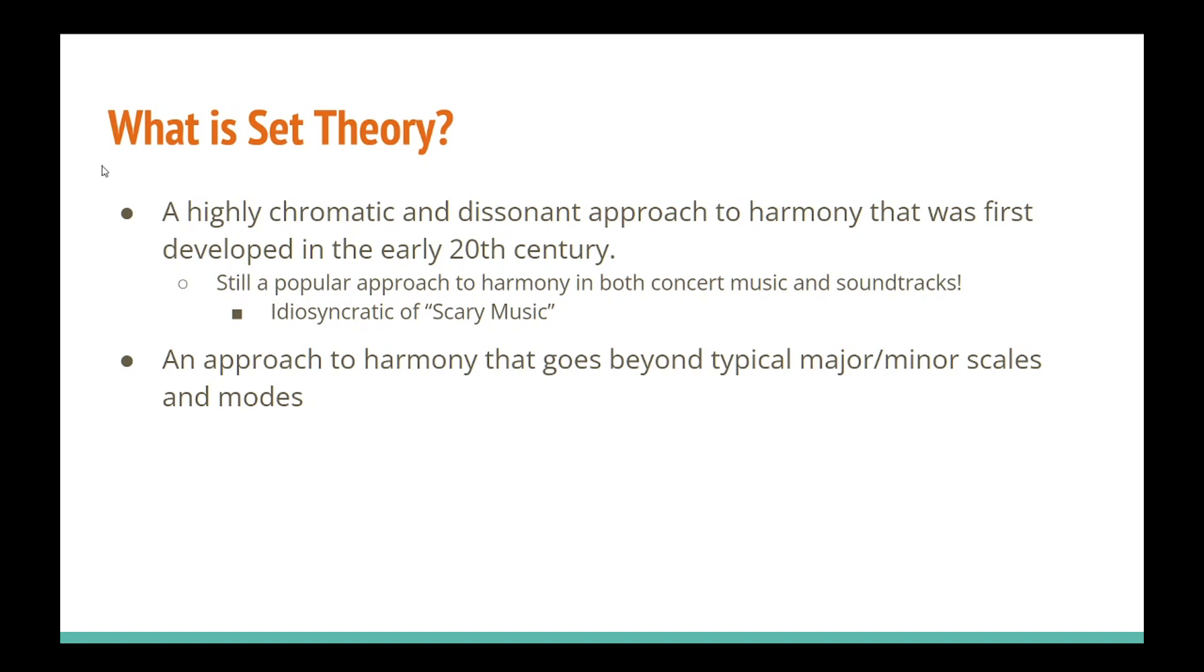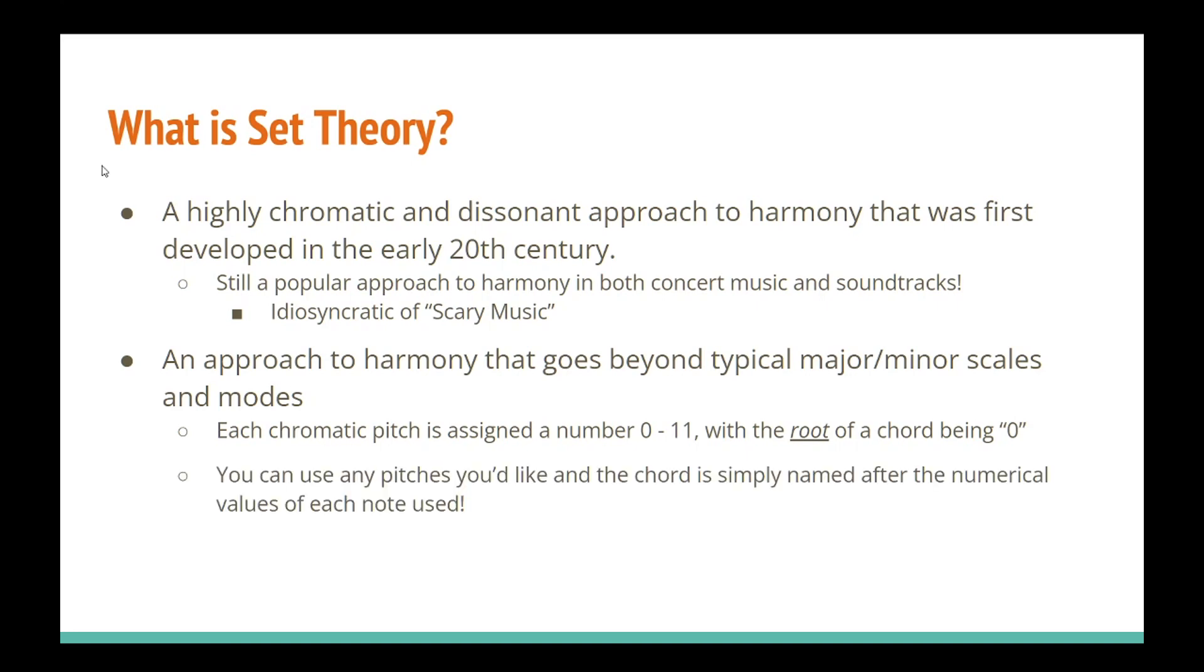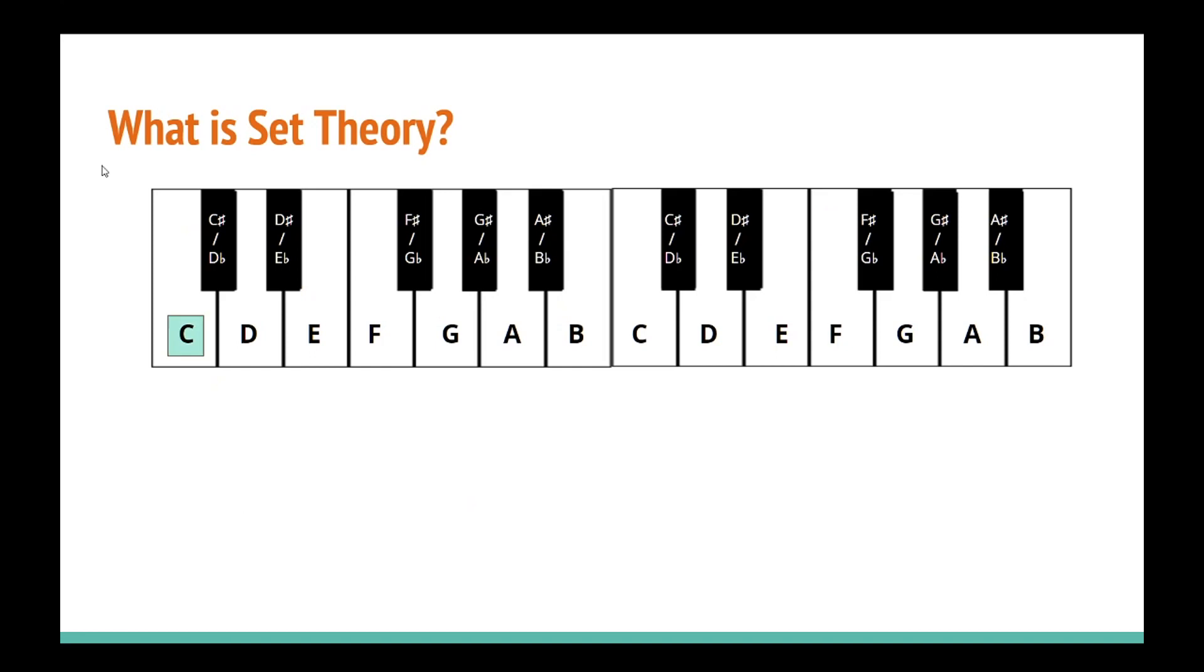In set theory, the pitches of a chord are referred to by numbers marking a chromatic scale from 0 to 11, with the root of the chord being 0. Instead of using traditional chords like triads or seventh chords or even extended chords, set theory simply just slaps notes together and names them after the numerical pitches used. For example, let's build a chord with a C as our root. Since C is our root, its numerical value is 0. That means that C sharp is 1, D is 2, D sharp is 3, etc.